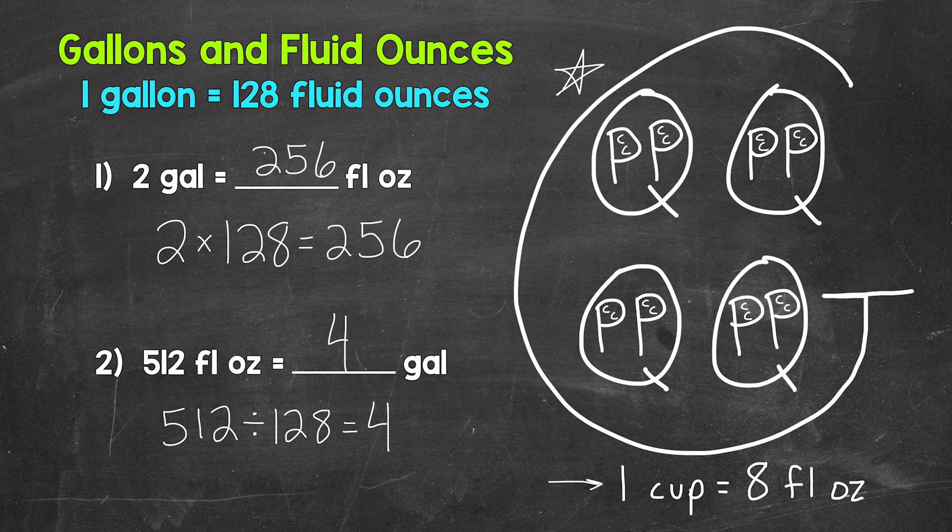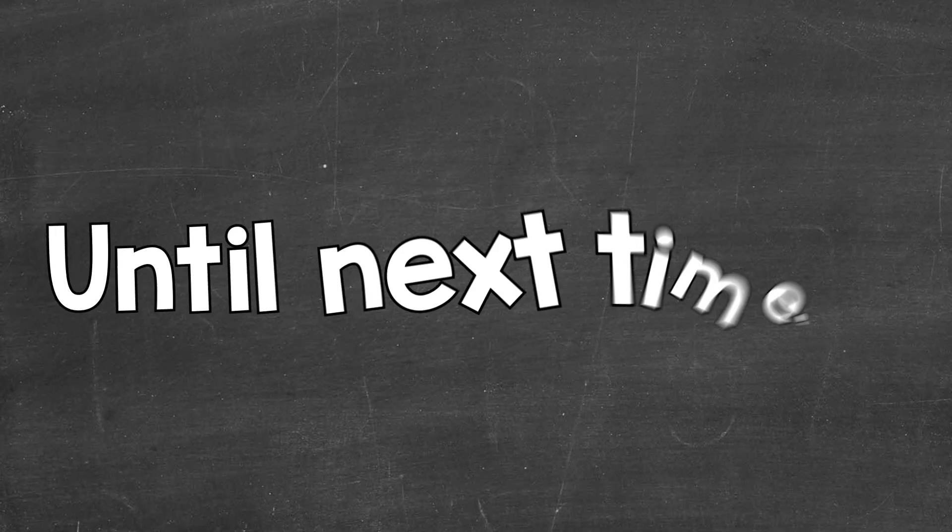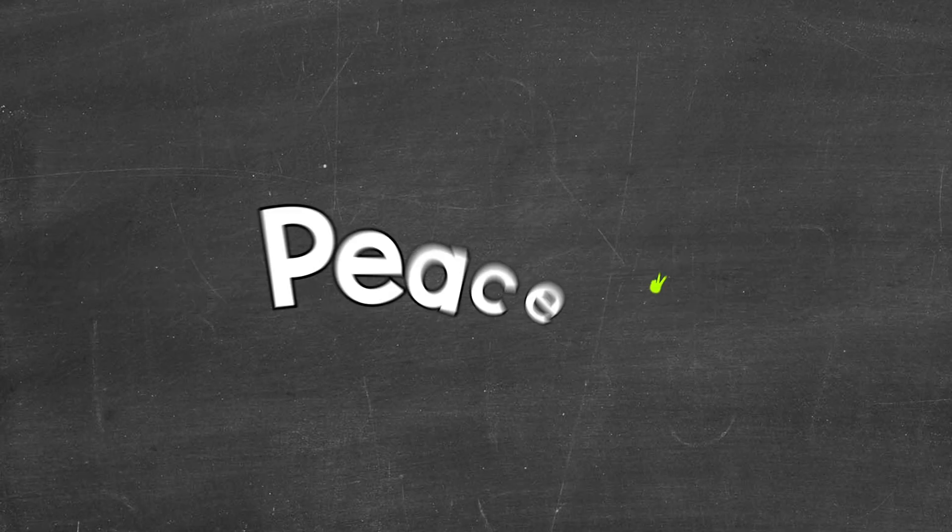So there you have it. That's how many fluid ounces equal a gallon, 128, along with some conversion examples. Check the description for more measurement conversion videos. I hope that helped. Thanks so much for watching. Until next time, peace.